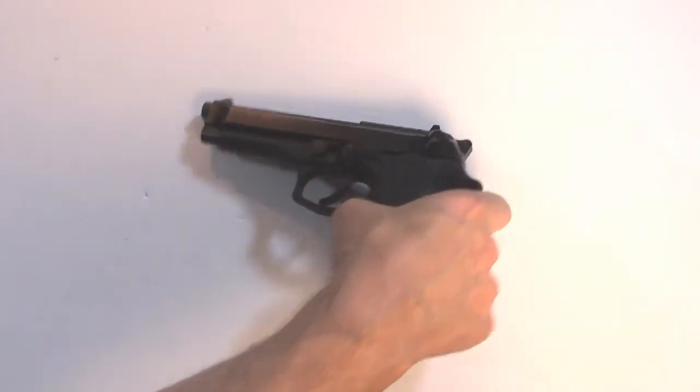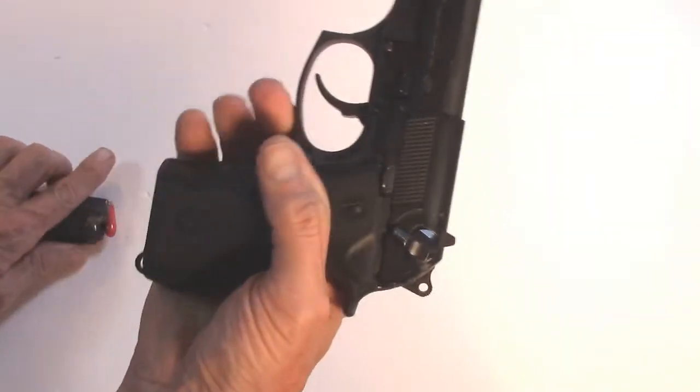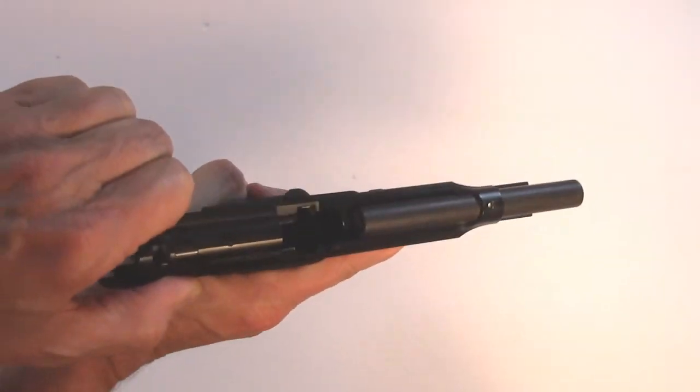The first step in doing any gunsmithing or cleaning is to clear the weapon. With the safety on, remove the magazine and rack the slide a few times.